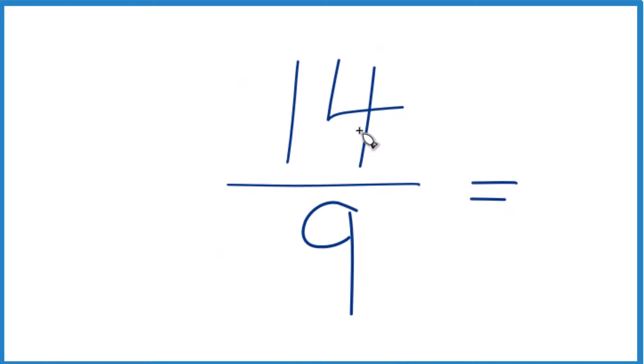Nine goes into 14 one time. One times nine, that's nine. So we have one, that's our whole number.